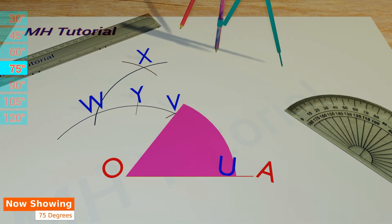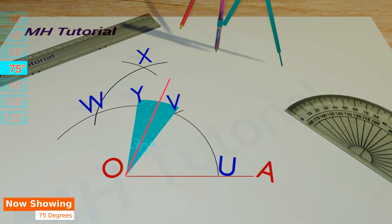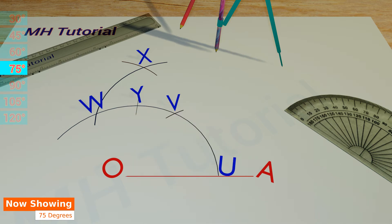Now if we connect point O and point B, a 60 degree angle will be created. And if we join O and Y, it produces a 90 degree angle. Thus the angle of 75 degrees lies between OB and OY. If we bisect the angle BOY, which is 30 degrees, we should get a 15 degree angle. Since 60 and 15 make 75, we are now going to bisect the angle BOY.